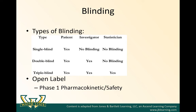Blinding is one way to help with biases, and there are different types of blinding in a trial. A single-blinded trial means the patient doesn't know which treatment condition they've been randomized to, but the investigator, statistician, and people doing data collection and analysis are not blinded. A double-blind trial — the most common type you'll come across — is where both the people collecting the data and the patient are blinded to the treatment condition, but the statistician and data analysts are not blinded.